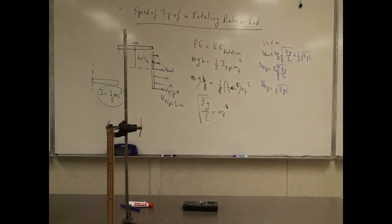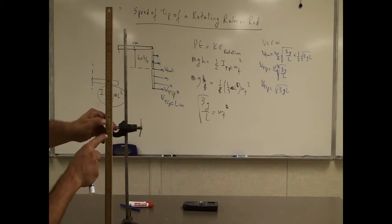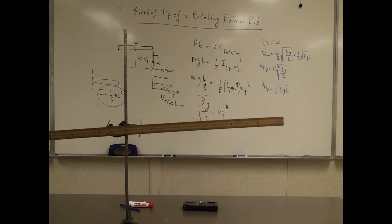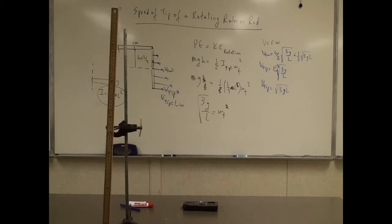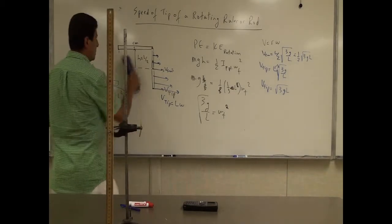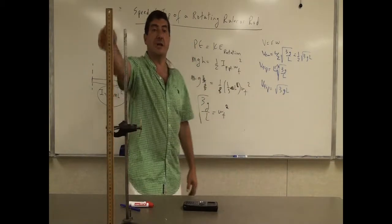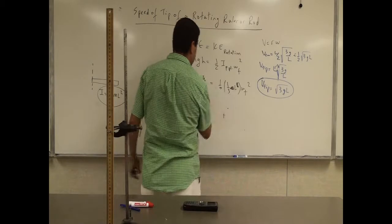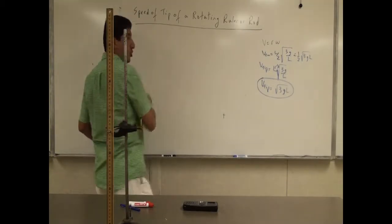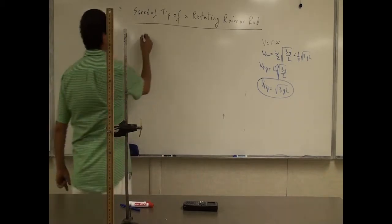Now I'm going to ask: if I take the ruler and pivot it from another point — the 66 centimeter mark — and perform the experiment from the horizontal position, what's going to be the velocity of the tip? The problem becomes more complicated. Let's perform the calculations again with the hole at the 66 centimeter mark.